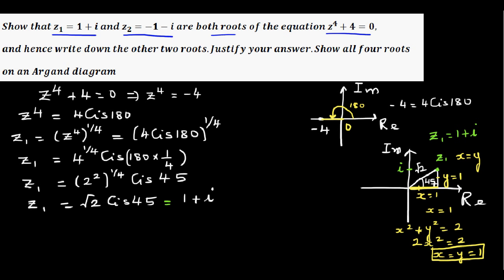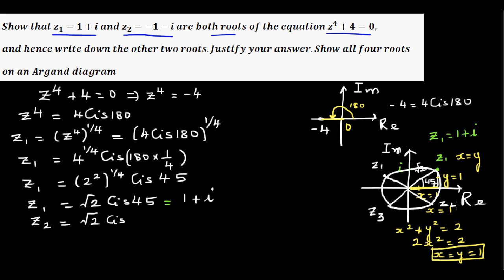Now let's find the remaining roots. z2 in polar form is at the same distance √2, but at 45° + 90° = 135°. The four roots are equally spaced on a circle at 90° apart: z1, z2, z3, and z4, all at a radial distance of √2.